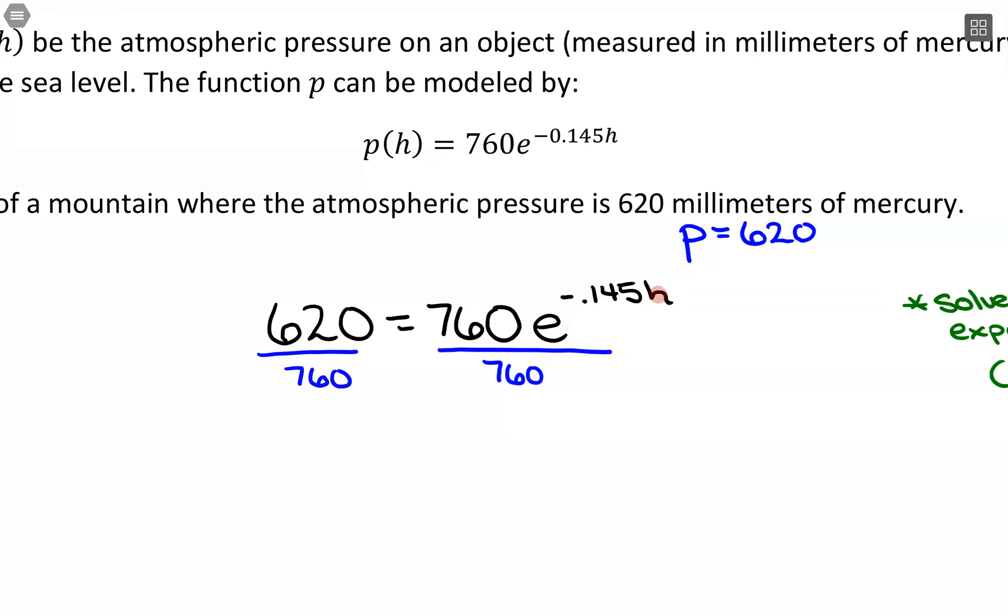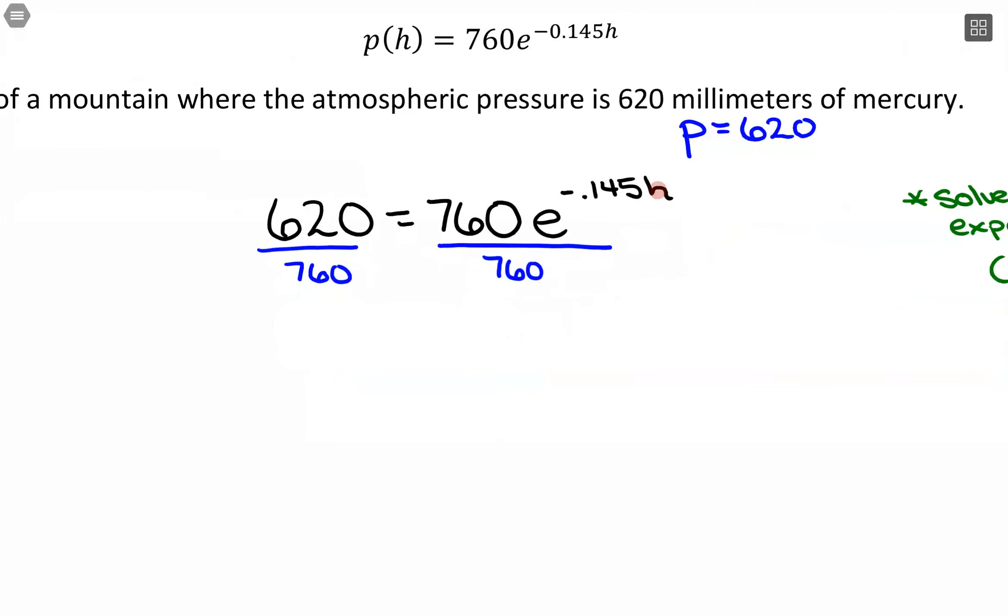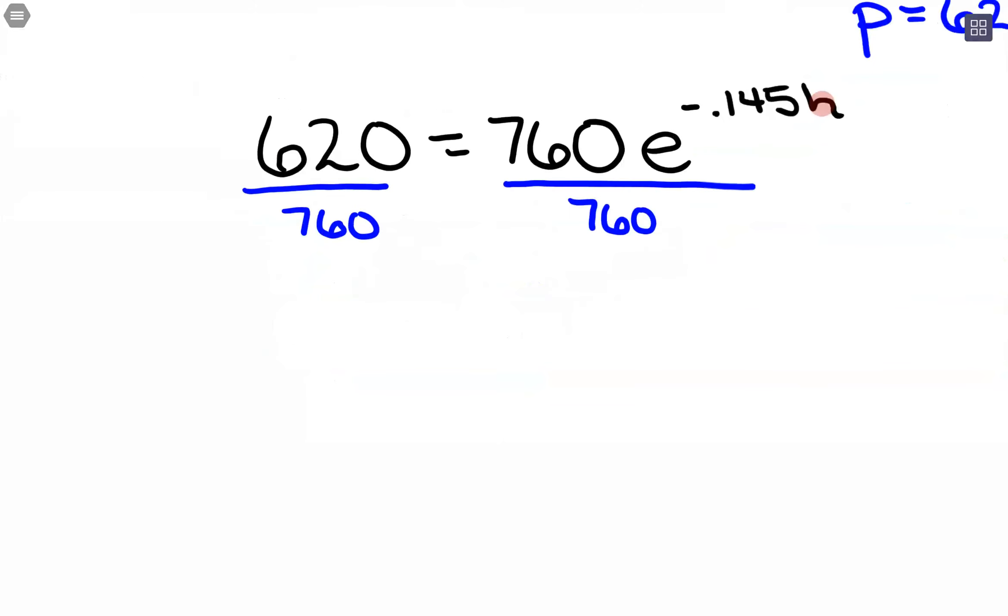And what I'm going to do is, because if you plug this in a calculator it gets pretty messy, and I want to keep things as accurate as possible for as long as possible, I'm going to leave this as the fraction. You could reduce it if you want to, but that's not too important since eventually we will just plug it into a calculator. So I'm just going to leave that as 620 over 760 equals e to the negative 0.145h.